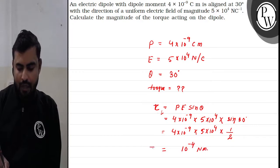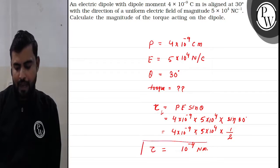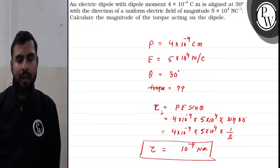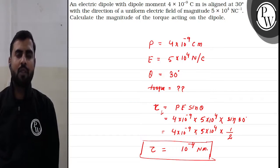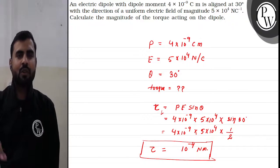So the torque acting on this dipole when it is placed in an electric field is 10^-4 newton meter. I hope this is clear to all of you. Thank you.